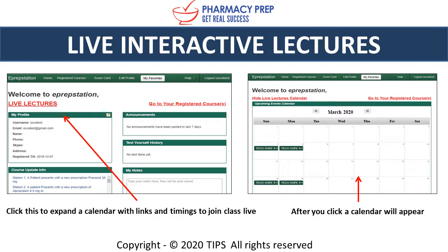Live Lectures. One of the main benefits students like about our home study courses is we include interactive live lectures. We broadcast from our Toronto and Brampton campuses where students see everything that is done on the computer screen as if you were here in class. We have a live lecture calendar within E-Prep Station, which helps you easily see when you have classes, so you know when to be prepared to study and when you should be home in front of the computer. But if you're unable to attend live, we do record all lectures.